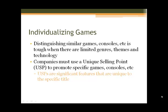How do we individualize games and distinguish them from similar games or consoles? This is actually very tough and limited because of available genres, themes, and technology. Companies must use a unique selling point, or USP, to promote specific games or consoles. USPs are significant features unique to that specific title. For example, if you're looking for a first-person shooter, you may choose Halo over Call of Duty because you want something more futuristic rather than modern — it depends on your preference as a player and how the game is marketed to you.